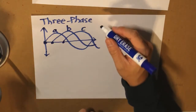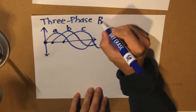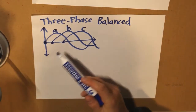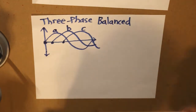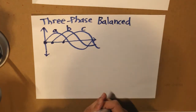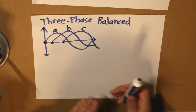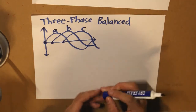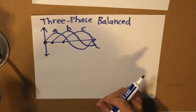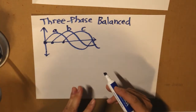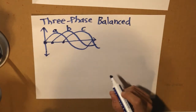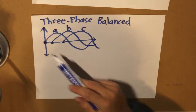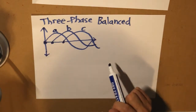Now let's understand what 'three phase balanced' means. Three phase balanced basically means that the three waves are coordinated at certain positions which cancel each other out. Canceling causes the balance. So what is the necessary condition for our three different waves to cancel each other out?